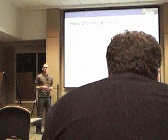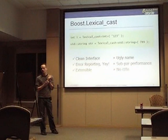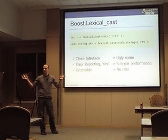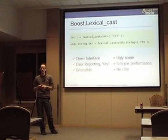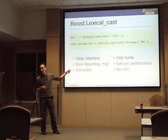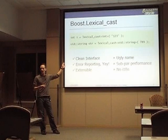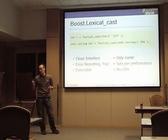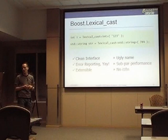Here's how you use it — you just cast, pass something in, cast it to what you want it to be, and that's it. You're done. The other way works too. So here we have a clean interface, we actually have error reporting, and it's extensible — all you have to do to make one of your types lexical-castable is write an ostream inserter and an extractor. It's not all roses though: lexical_cast is a terrible name, the performance kind of sucks because you need to dynamically allocate a string, and there's no internationalization.